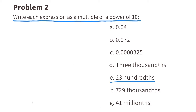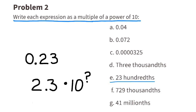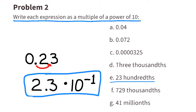E: twenty-three-hundredths. That means the three is in the hundredths place, so we can write this as 0.23. To write this expression as a multiple of a power of ten, we can write 2.3 times ten to a negative power, because twenty-three-hundredths is a decimal. And since the decimal is only one place to the left of the two, the exponent is a negative one.